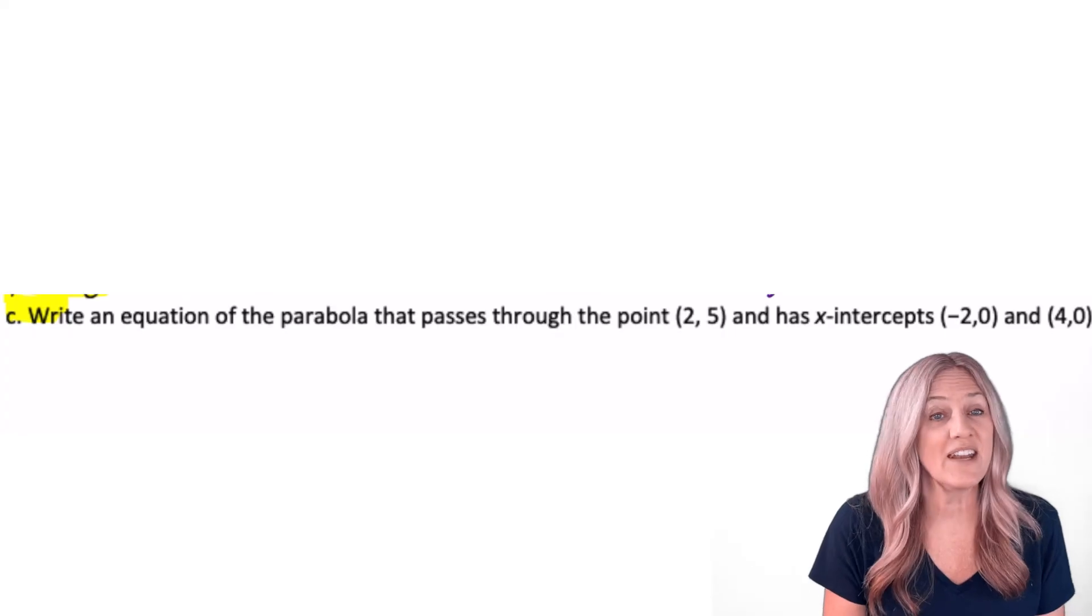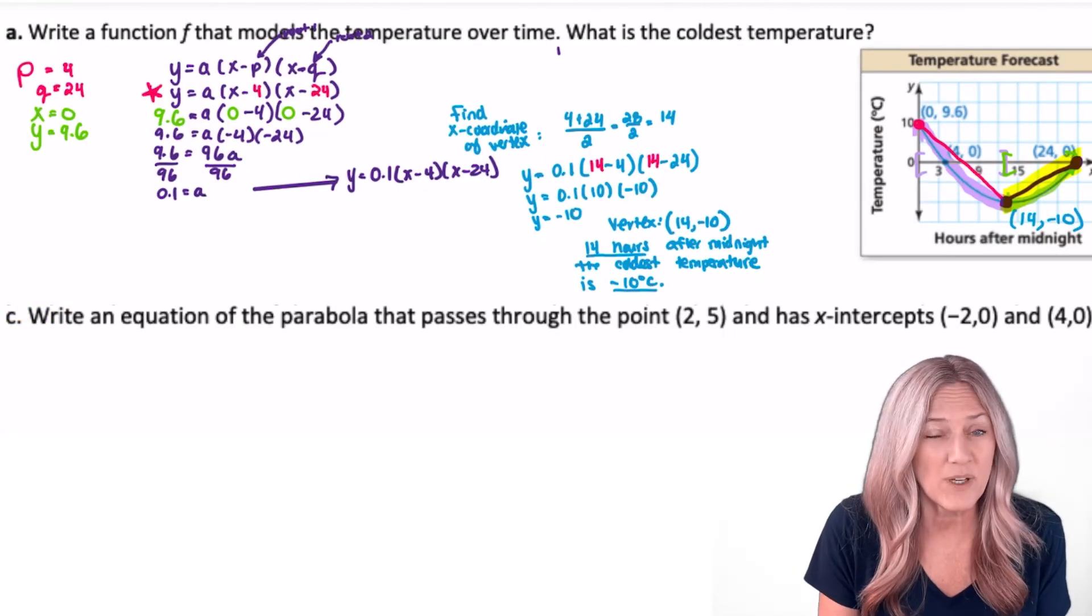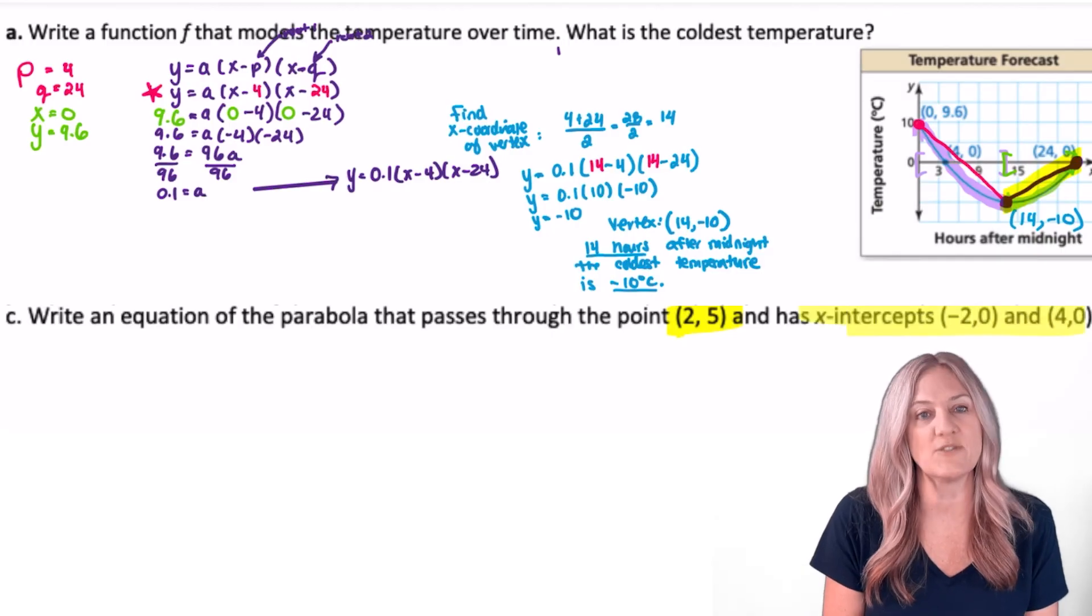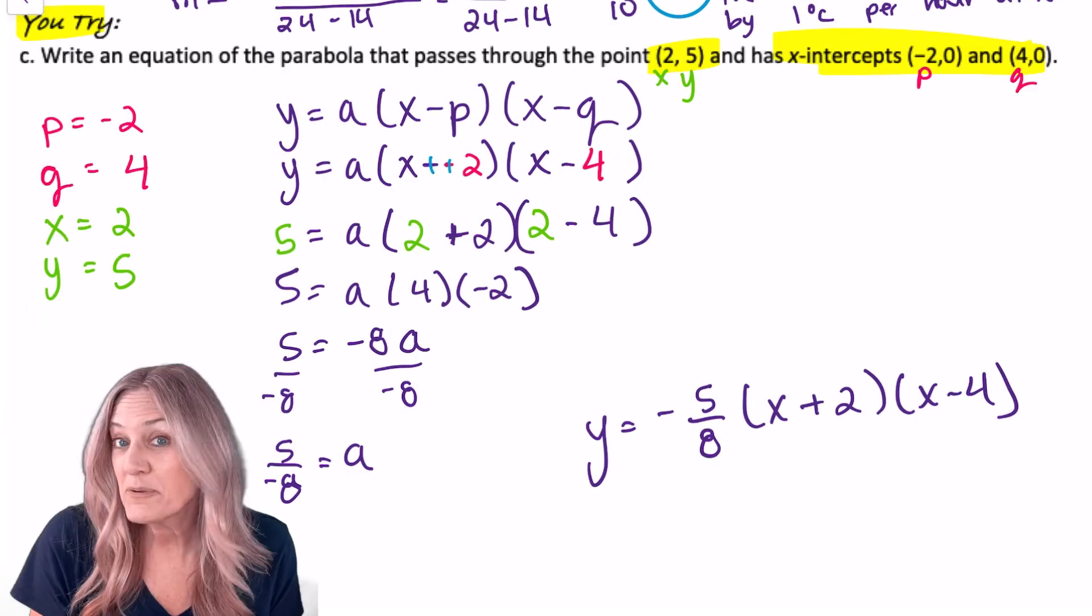Time for you to try. You're given x-intercepts and a point. Refer back to part A in the previous example and write a quadratic function. Quick recap.